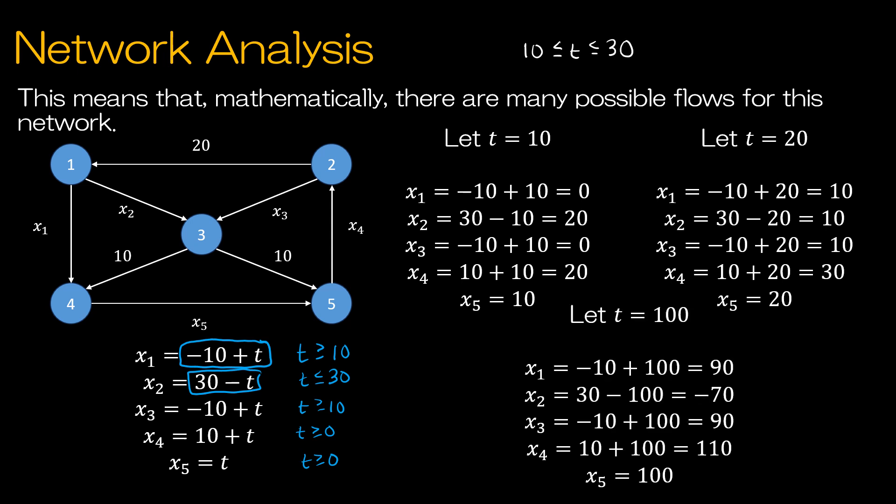Because if I say let t equal 100, then I'm going to end up with a negative network flow at junction 2, and that's not okay.